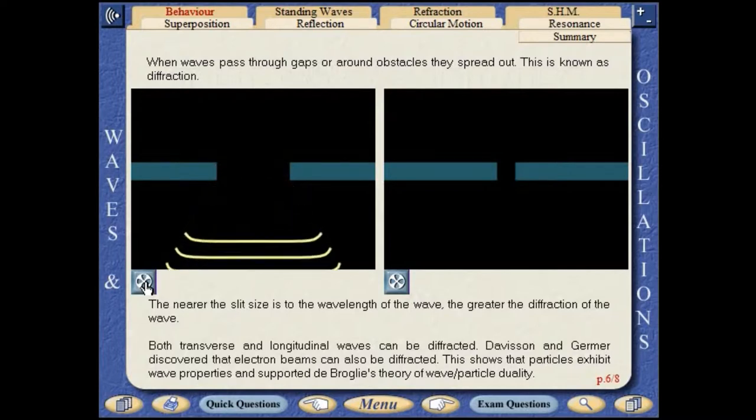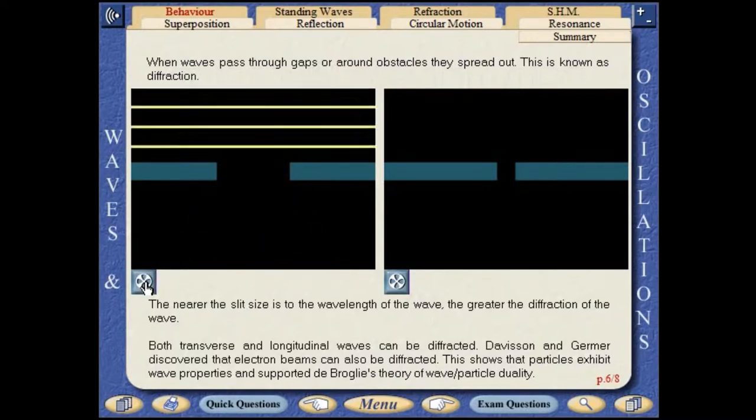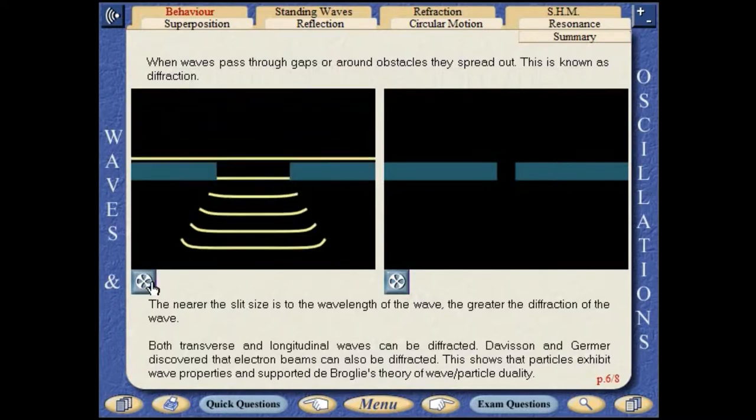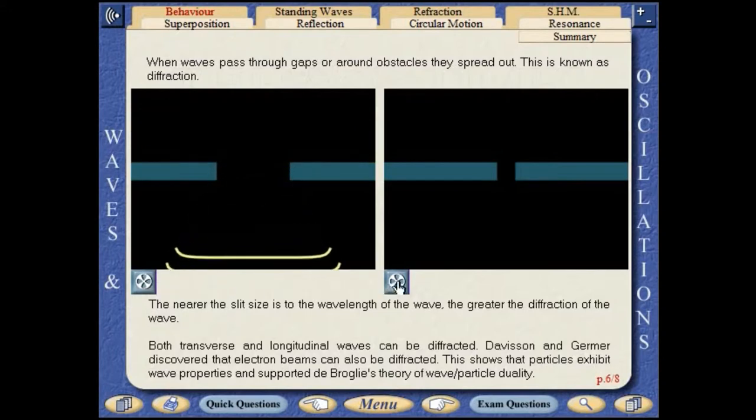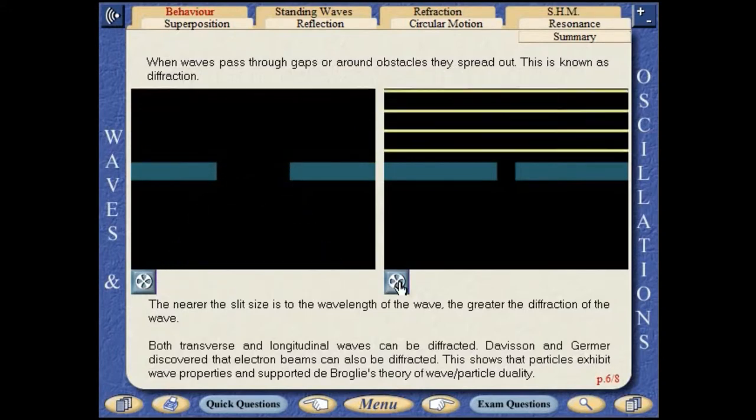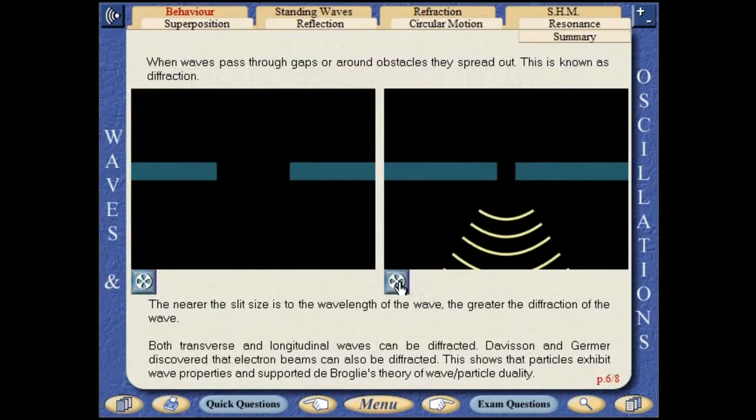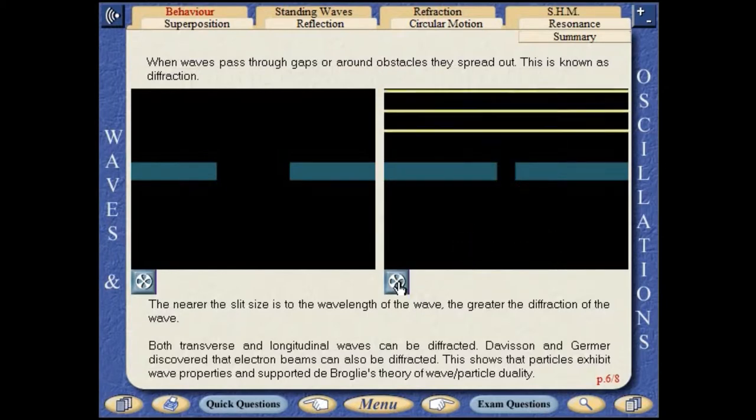Both transverse and longitudinal waves can be diffracted. Davison and Germer discovered that electron beams can also be diffracted. This shows that particles exhibit wave properties and supported de Broglie's theory of wave-particle duality.